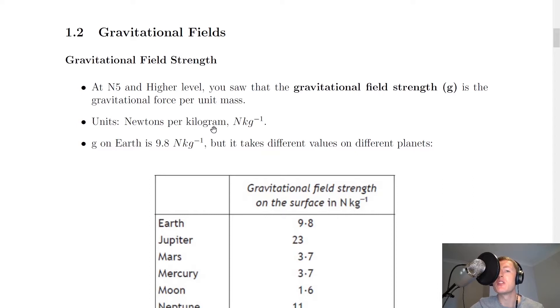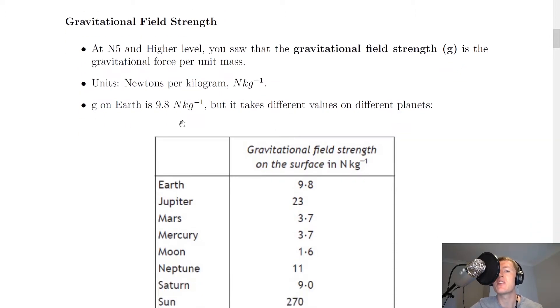The units are newtons per kilogram, n kg to the minus 1, or n slash kg. And you should remember that g on Earth is 9.8 newtons per kilogram, but it takes different values on different planets.